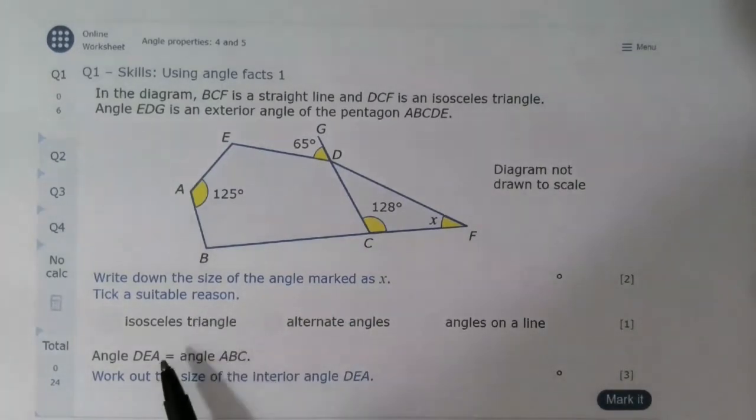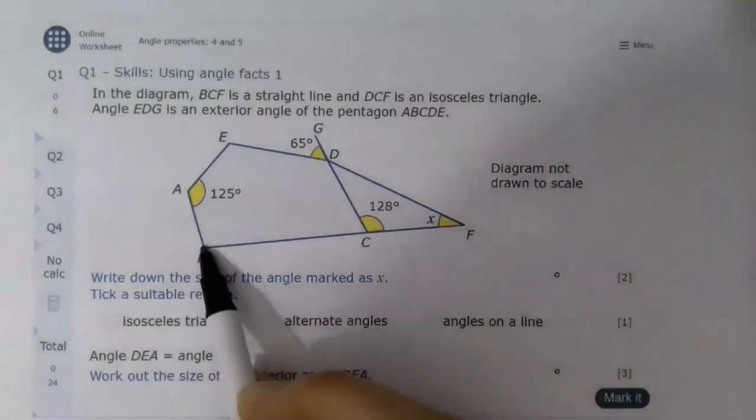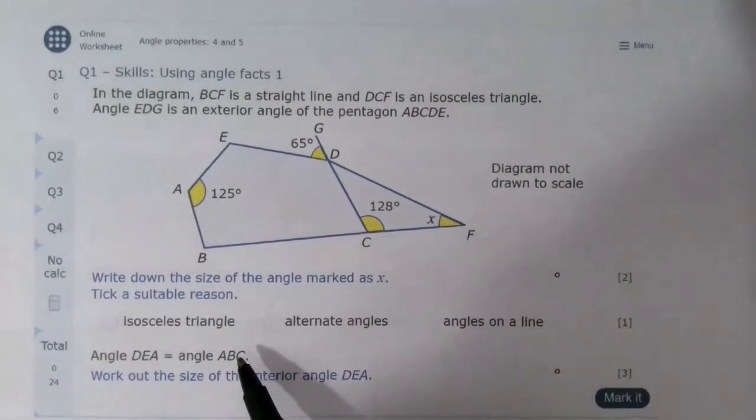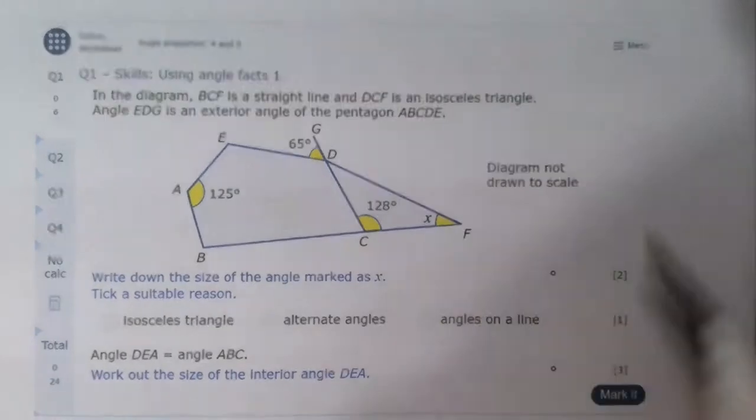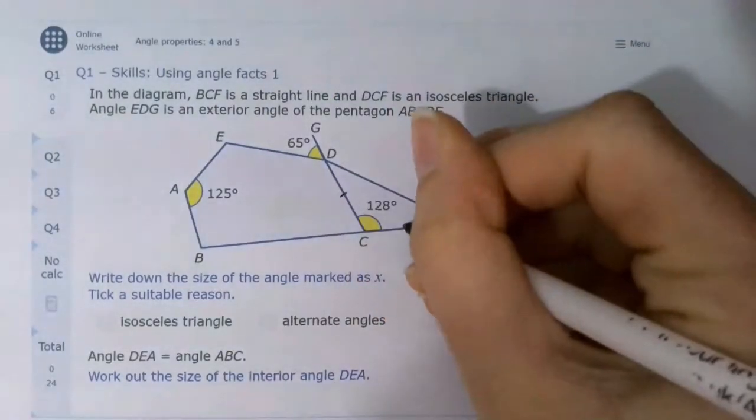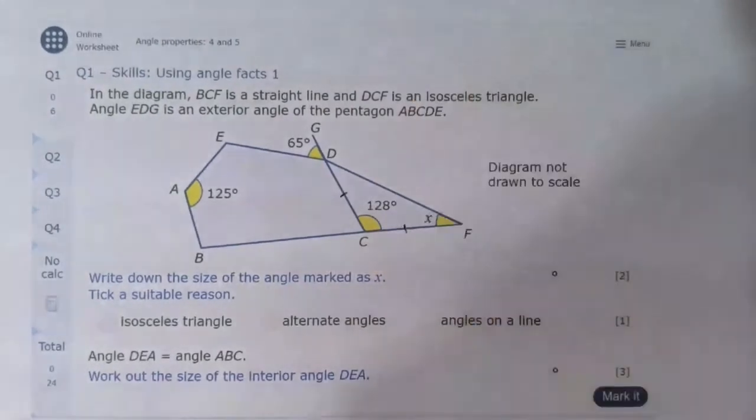In the diagram, BCF is a straight line, so this line here is a straight line, and DCF is an isosceles triangle. So we could put little dashes on the sides to show that those two sides are equal because it's isosceles.